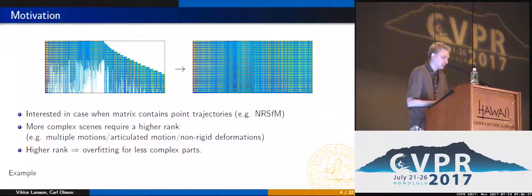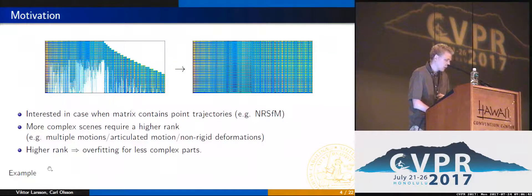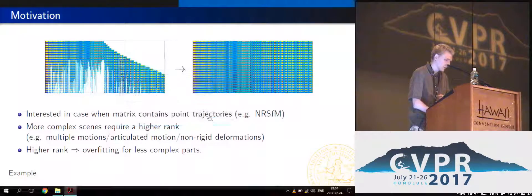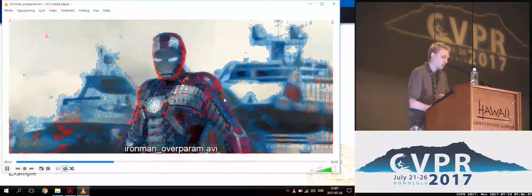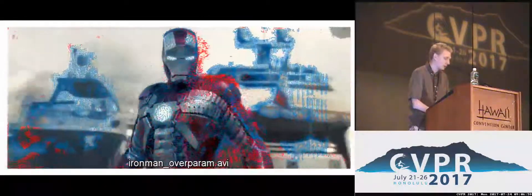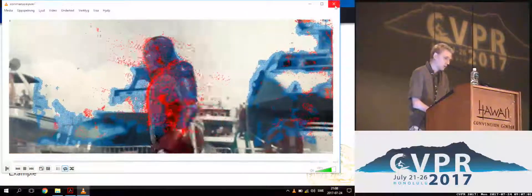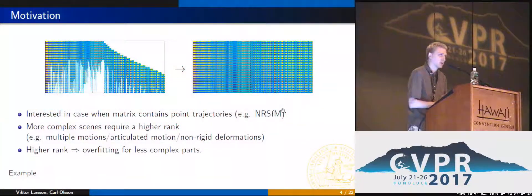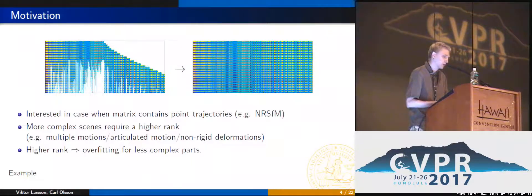However, as you start increasing your rank, you will start overfitting parts of the matrix which are less complex. Here the blue points are observed in the current frame, and the red points are recovered using a rank constraint. While some red points are correctly recovered, others are under-constrained and start flying around. While you can try to tune your rank to get a better recovery for the missing trajectories, the rank is a low-resolution parameter, and it's not always possible to find a rank for which every trajectory has a good reconstruction.